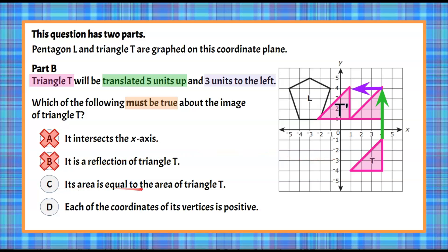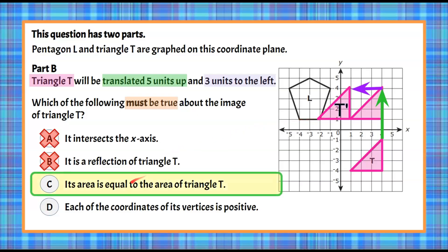Choice C: its area is equal to the area of triangle T. We can see that it's clearly the same size and shape, so we're going to say the answer is C. We'll also check Choice D just to make sure: each of the coordinates of its vertices is positive. We know that's not true because it doesn't completely lie in the first quadrant. We have one vertex at negative two, positive one — so that has a negative coordinate. Answer choice D is not true. So our answer choice is C.